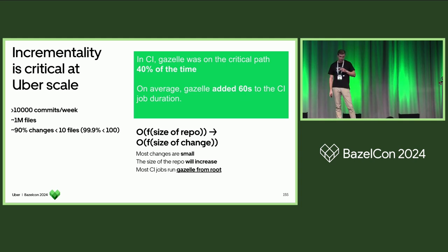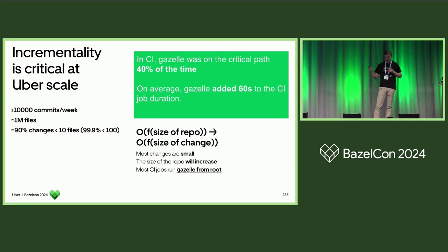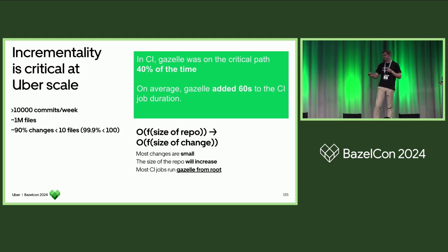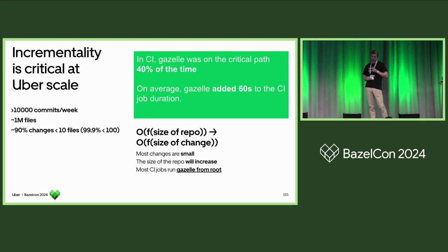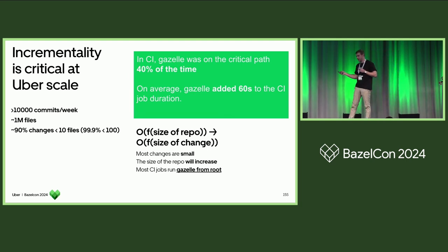At Uber scale, in our Go monorepo, we have 10,000 commits a week and about a million files. 90% of these changes are less than 10 files, and 99.9% are less than 100 files. So we really need to look at how we can run this as a function of the size of the change instead of the size of the repo. In CI, Gazelle was on our critical path 40% of the time, and on average it added a minute — so this is pretty significant, this is slowing everyone down.